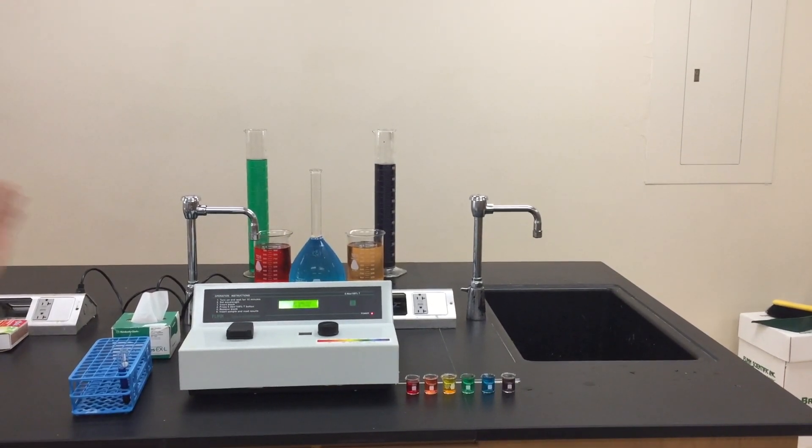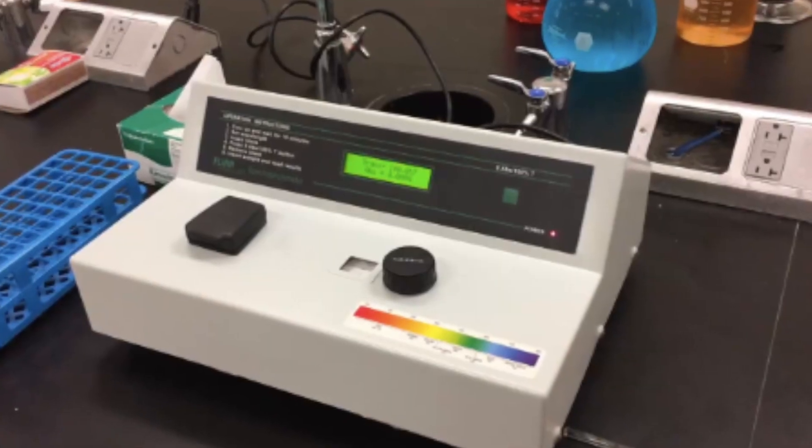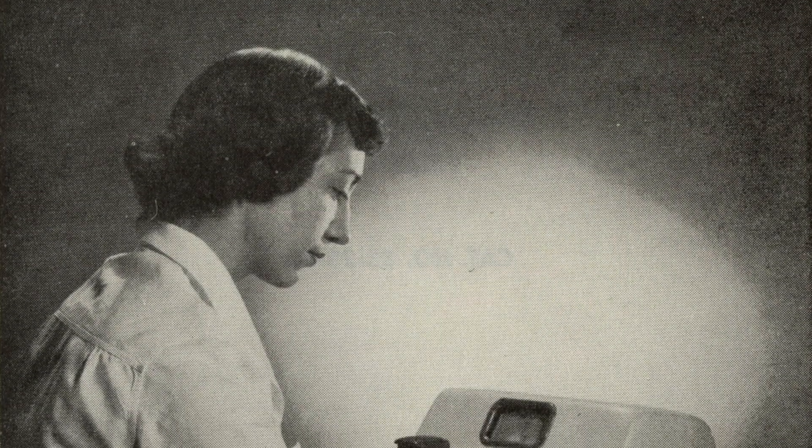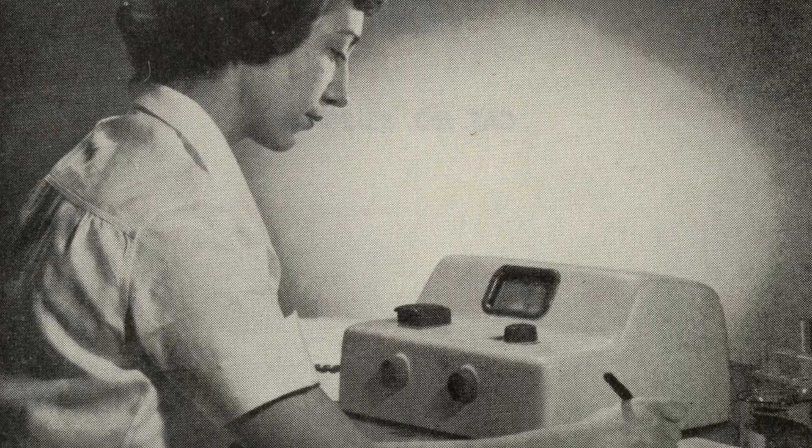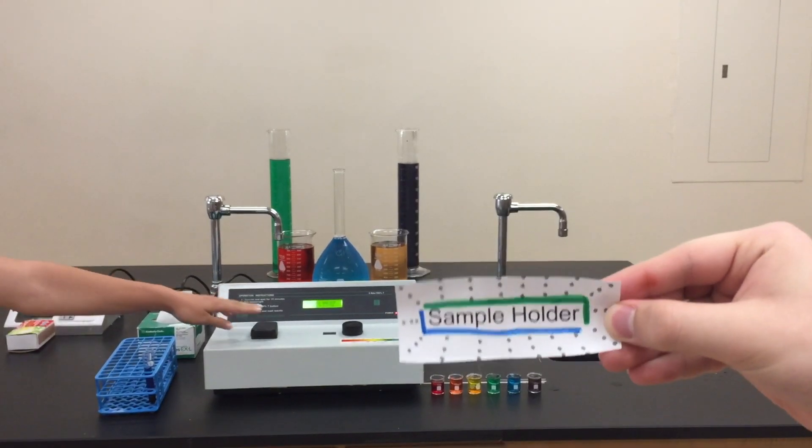Here we have a spectrometer, and today we are going to show you how to use it. The spectrometer is known more commonly as the Spec 20, and its production began in 1953. First, this is the sample holder. This is where you will insert the cuvette with the liquid you want to be measured.